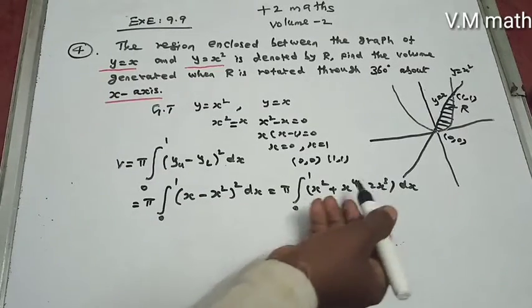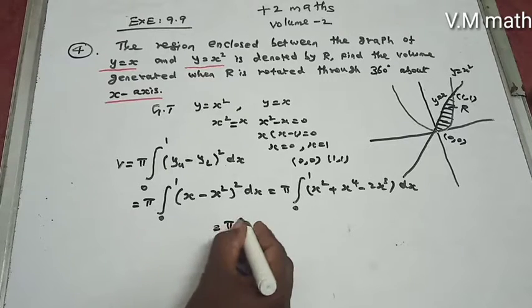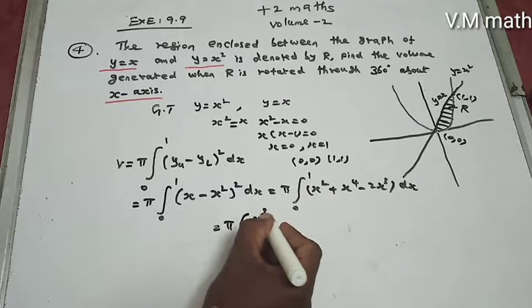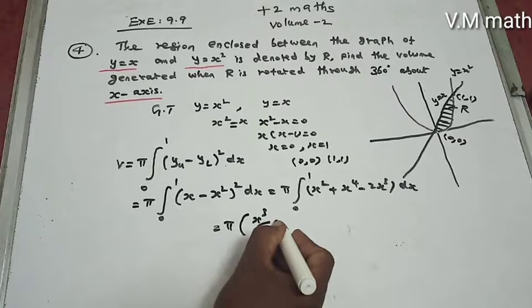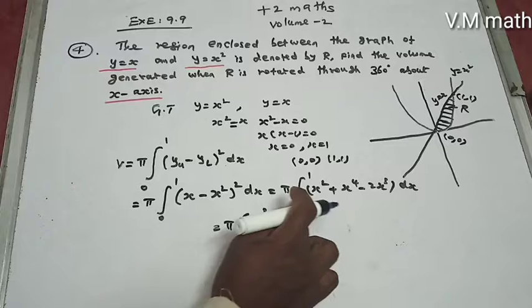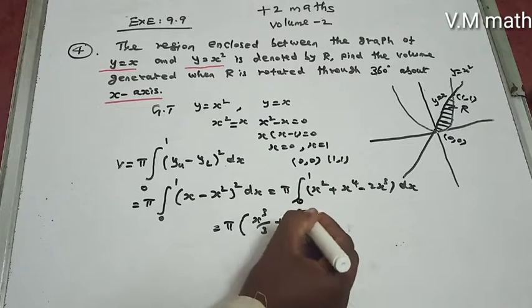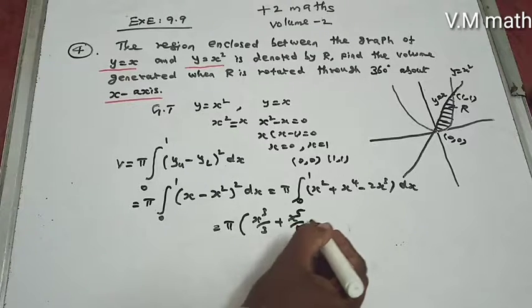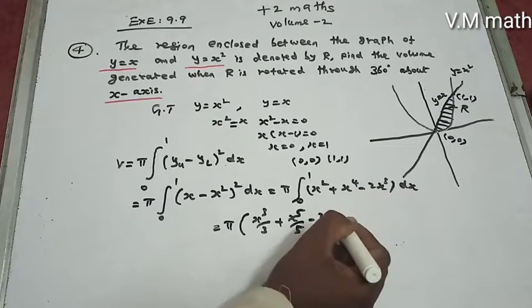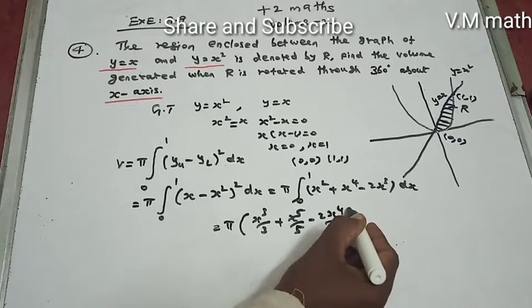Using the x to the power n formula for integration: π times [x cubed by 3 plus x to the power 5 divided by 5 minus 2x to the power 4 divided by 4], limit 0 to 1.